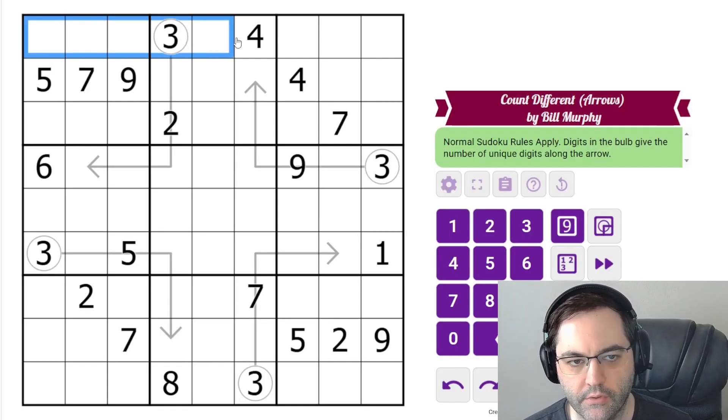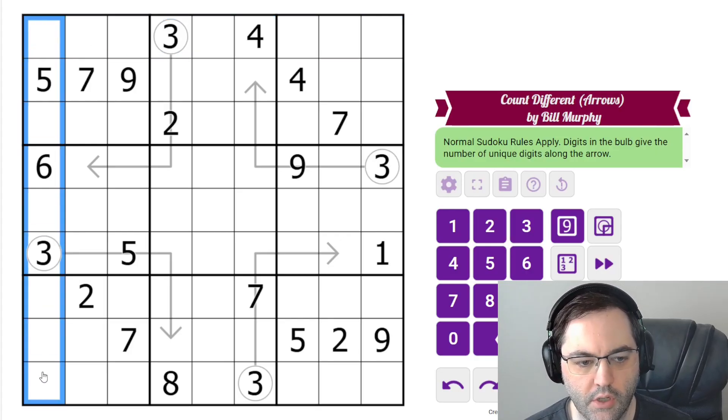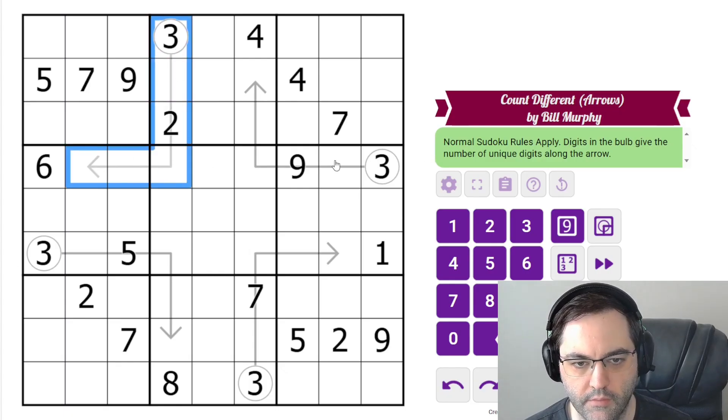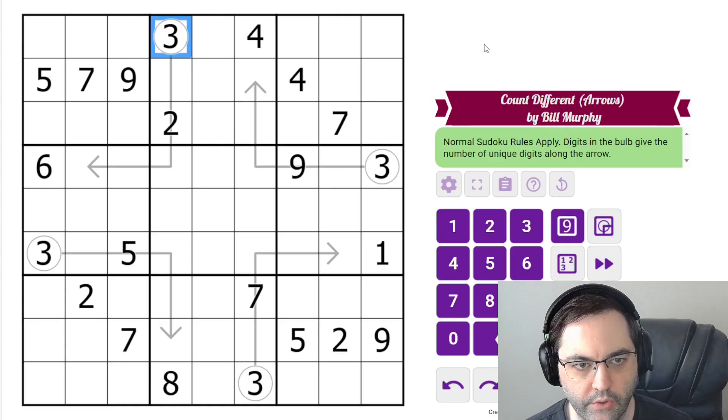We have normal Sudoku rules, one to nine in each row, column, and three by three box. Additionally, we have some arrows in the grid. There are four of them. And these aren't our typical arrows with sums. The digit in the circle is the number of distinct, unique digits along the arrow.